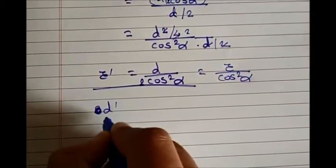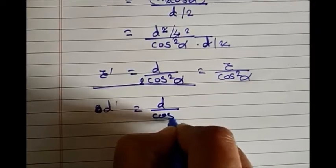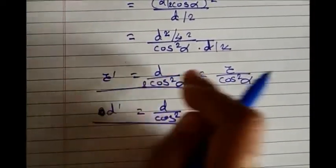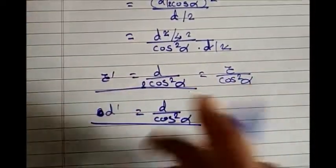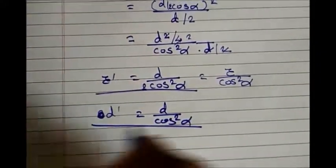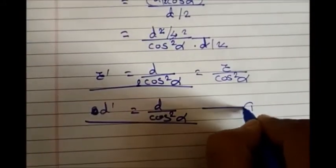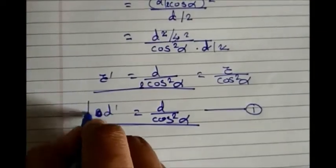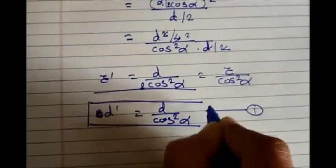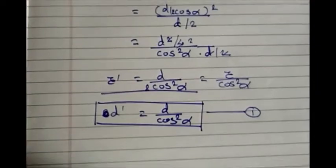In terms of diameter, the equivalent pitch circle diameter is d' = d/cos²α. This is equation 1, and it is an important formula required to design the helical gear.